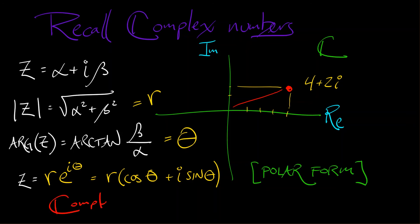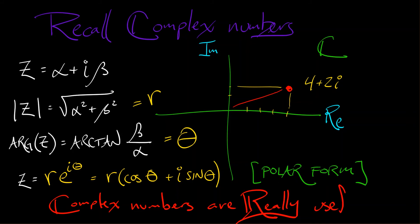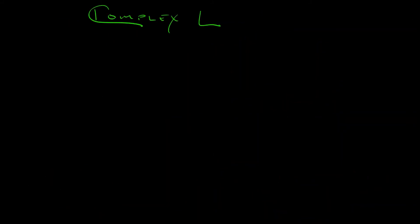Complex numbers are really, really useful. Even though we call them complex, they're really not that bad. Even though we call it imaginary — totally useful, totally for real. Now, where we're going to be seeing complex numbers all over the place is in eigenvalues.